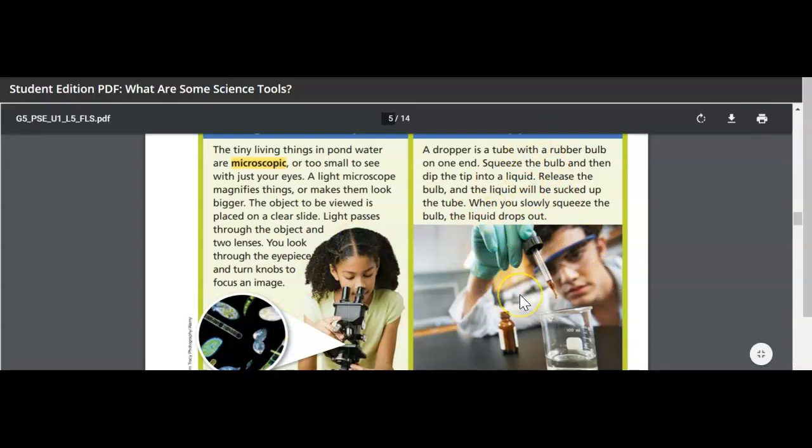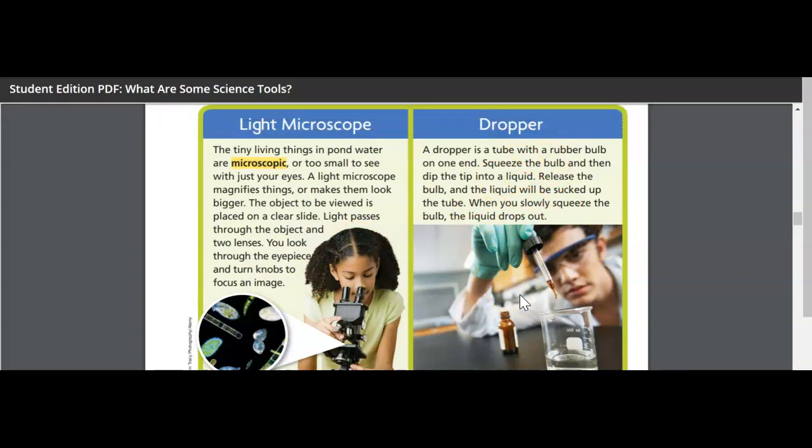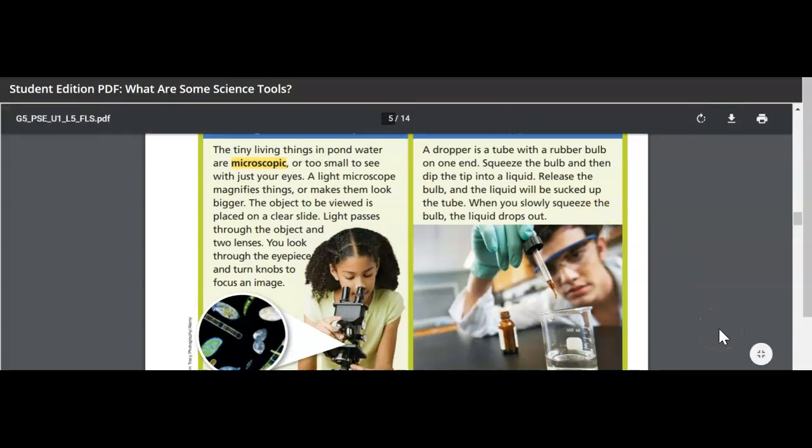Dropper. A dropper is a tube with a rubber bulb on one end. Squeeze the bulb and then dip the tip into a liquid. Release the bulb and the liquid will be sucked up the tube. When you slowly squeeze the bulb, the liquid drops out. So he's taking a tiny bit of liquid, and he has to control how much he puts in, so he uses the dropper to drop this liquid into this liquid.